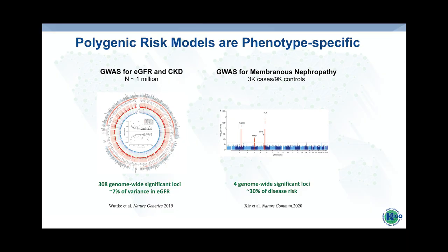When modeling polygenic risk for kidney disease, I'm thinking about fitting the model to a specific phenotype. One extreme is the GWAS for estimated GFR performed by the CKD Gen Consortium in over a million individuals using eGFR as a quantitative trait. Published in 2019, they discovered over 300 genome-wide significant loci; however, these loci explain only roughly 7 percent of the variance in eGFR.